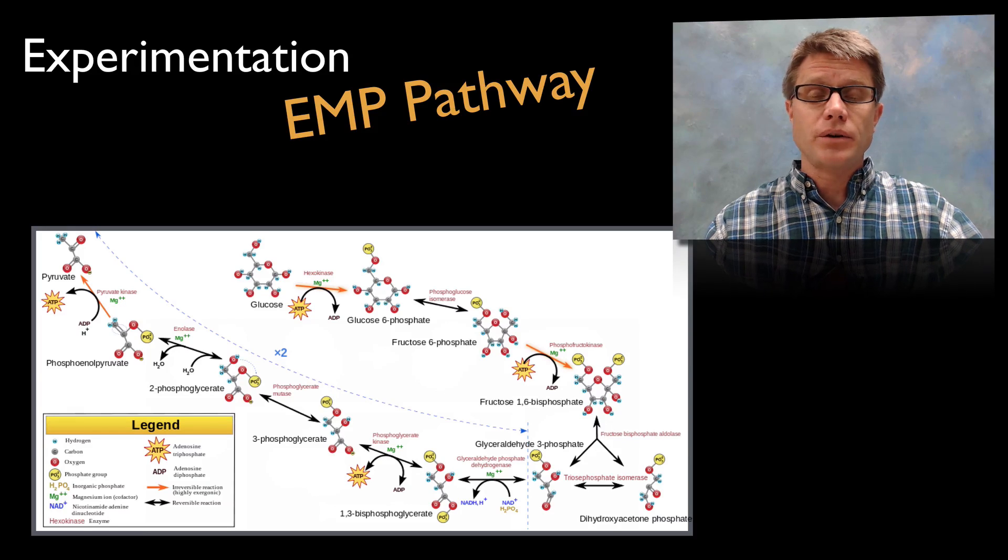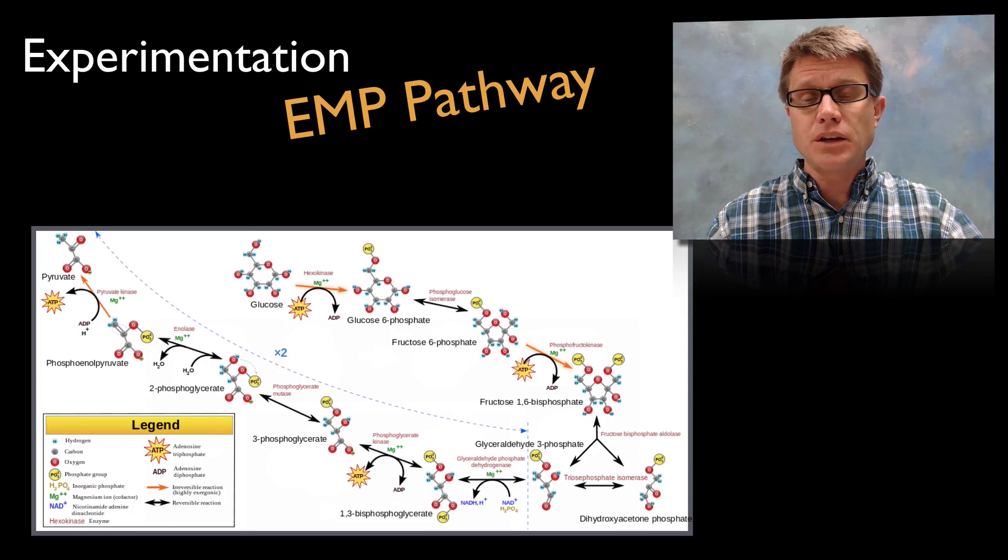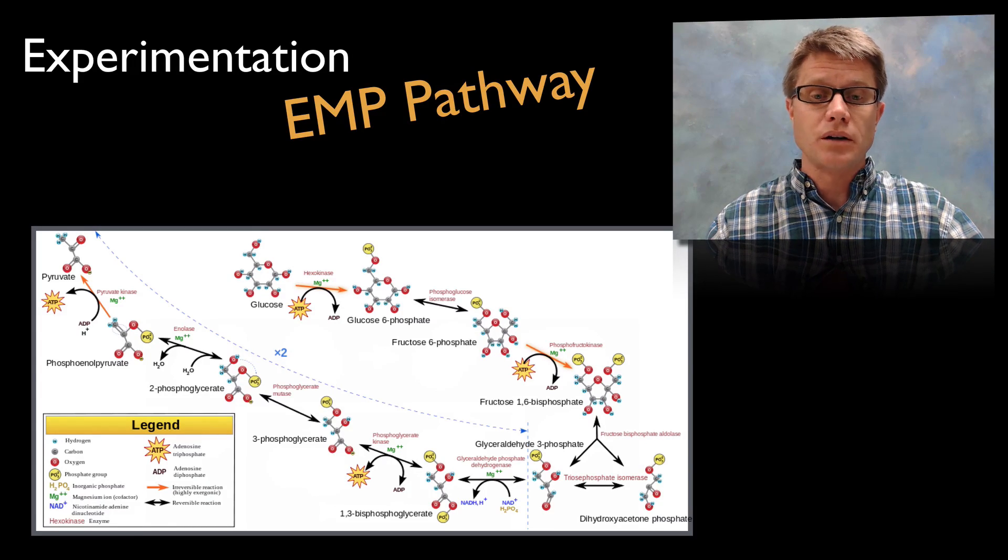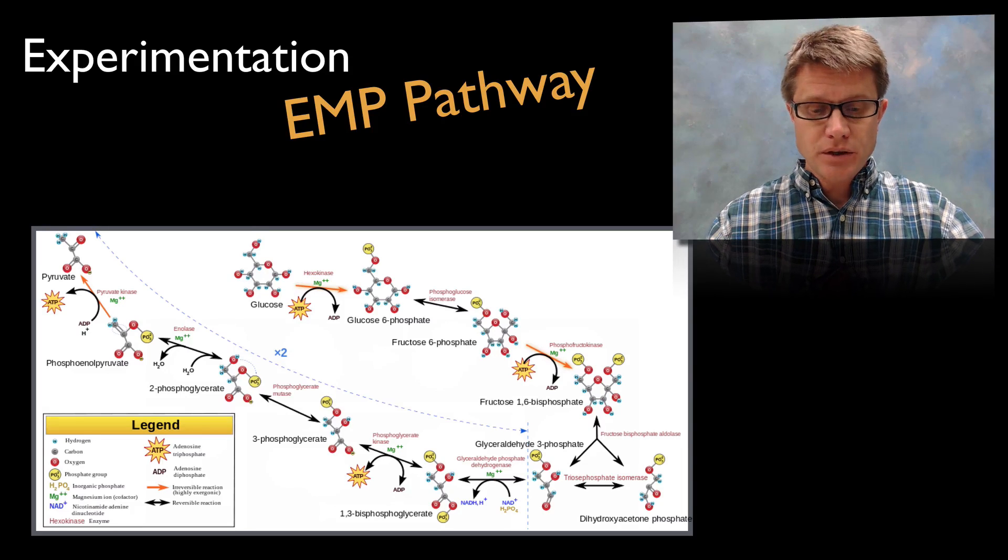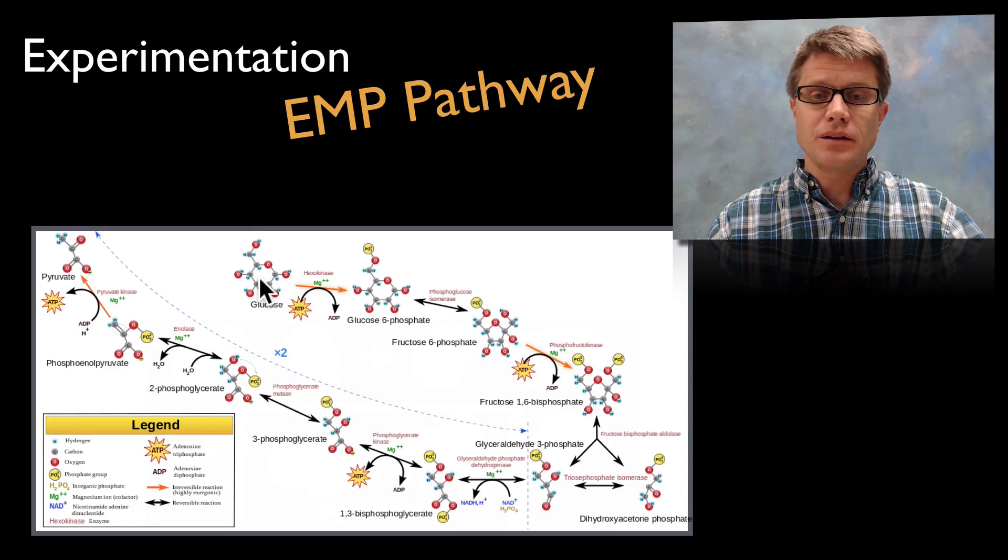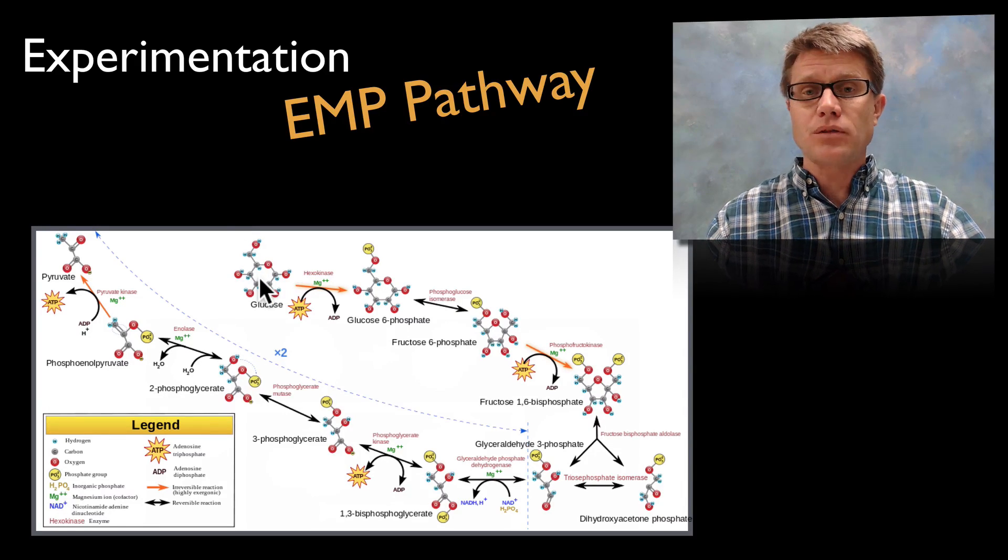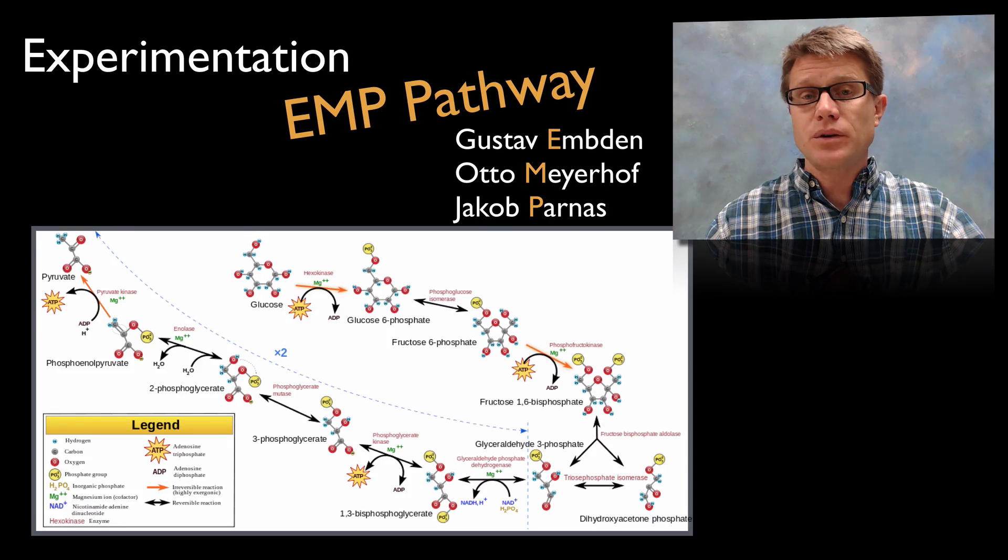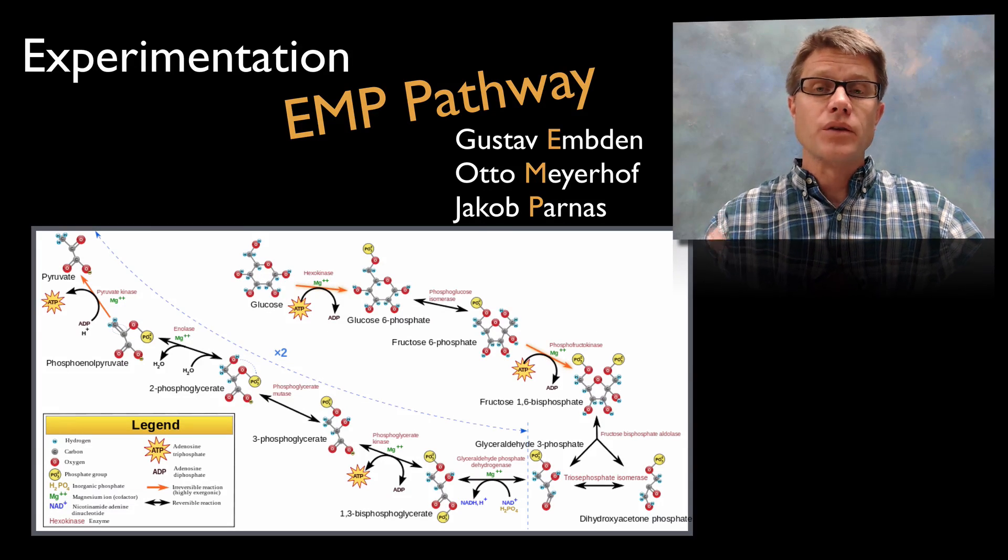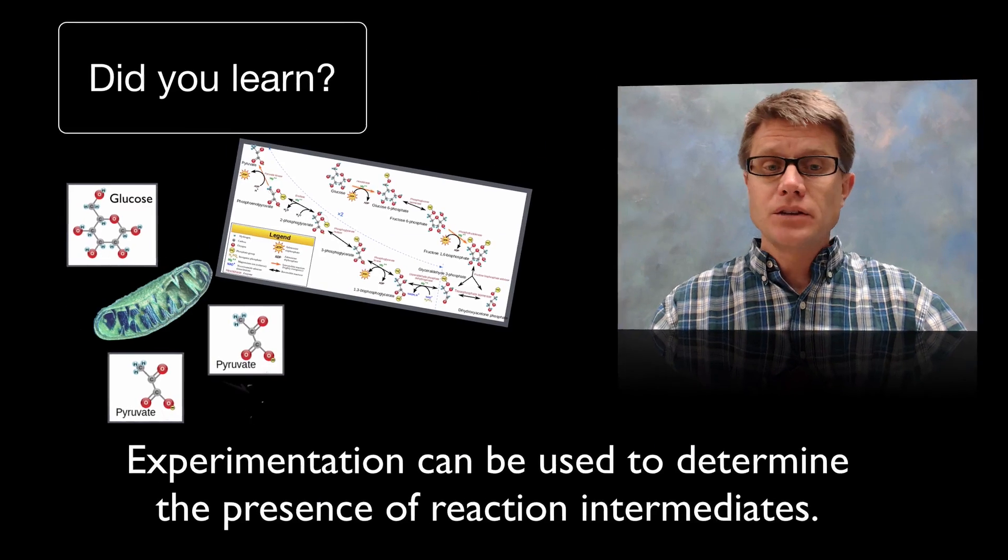And so how do we figure all these out? Well, that's what a lot of chemistry is. It's figuring out through experimentation what all of these intermediates are. And so this whole pathway I talked about with glycolysis is called the EMP pathway. Where does it get its name? It gets its name from the three scientists that figured this out over years and years of study.